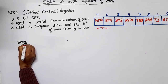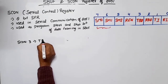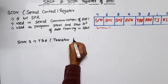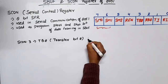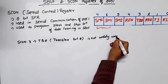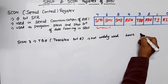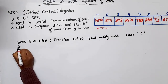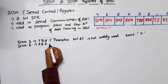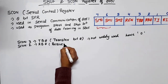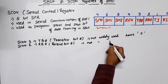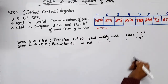SCON.3 is TB8, which stands for Transfer Bit 8. It is not widely used, so we will put it to 0. Similarly, SCON.2 is RB8, called Receive Bit 8. This is also not widely used, so we will also put it to 0.